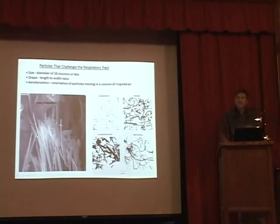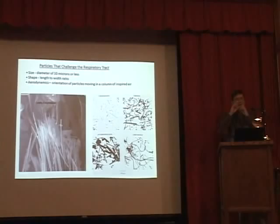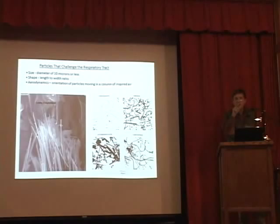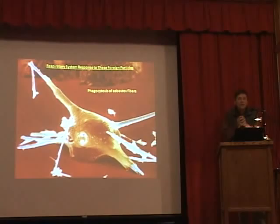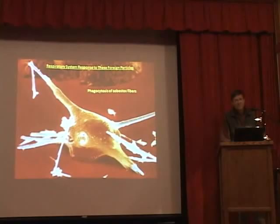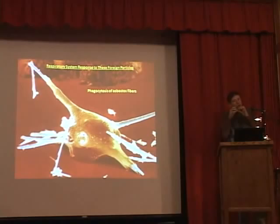Asbestos particles — particularly Libby amphibole — are long and thin like little arrows, very aerodynamic, so they can be breathed deep down into the lungs where other more prismatic particles would tumble and not travel as far. Here we have a macrophage — a white blood cell — trying to do its job: surround and engulf this asbestos fiber. Bless its heart, you've got to give it an A for effort, but it simply cannot get all the way around that long thin particle. This is where the system ultimately fails.